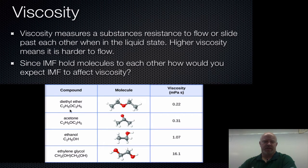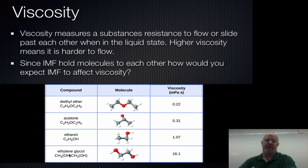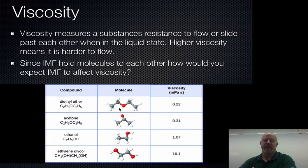Diethyl ether has four carbons and is a polar molecule, so this will be dipole-dipole. Then you have acetone, which is another polar molecule. So we have two that are only dipole-dipole and their viscosities are pretty close to each other. The acetone is a little bit higher because the oxygen is actually sticking out, which allows it to have a slightly stronger intermolecular force, versus diethyl ether where it's kind of crowded or hidden inside.